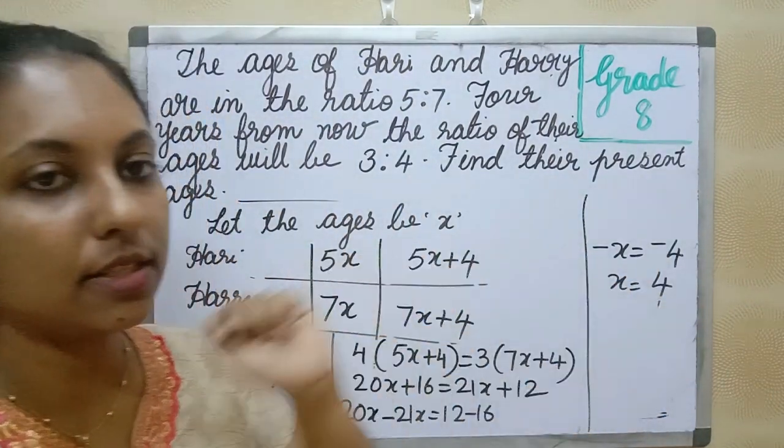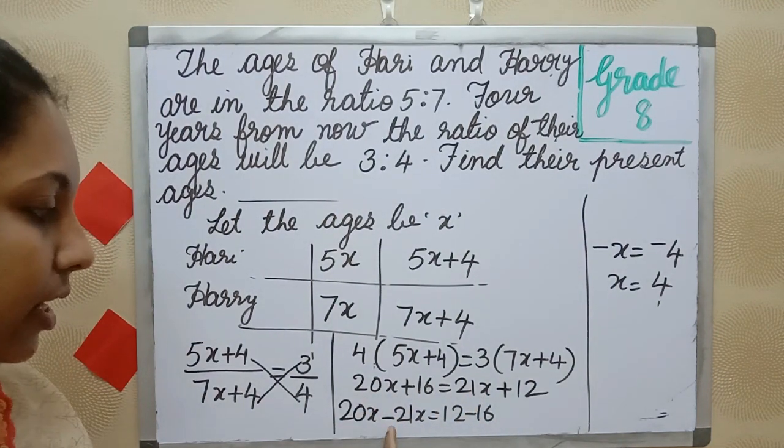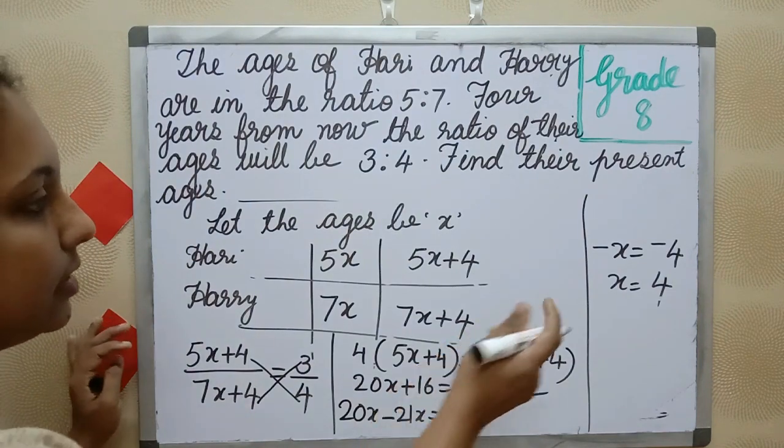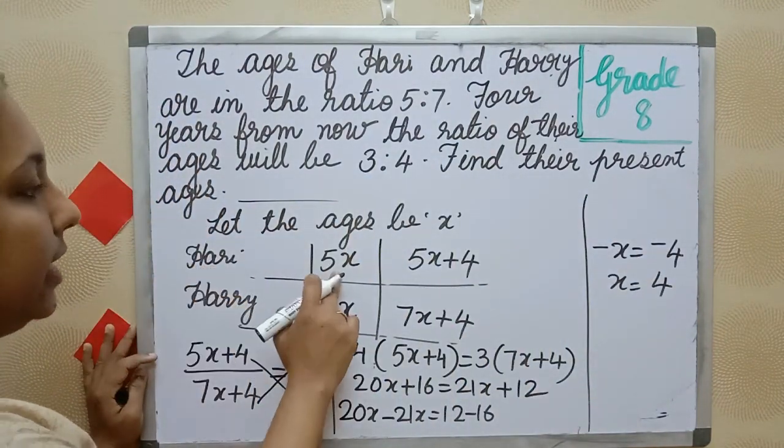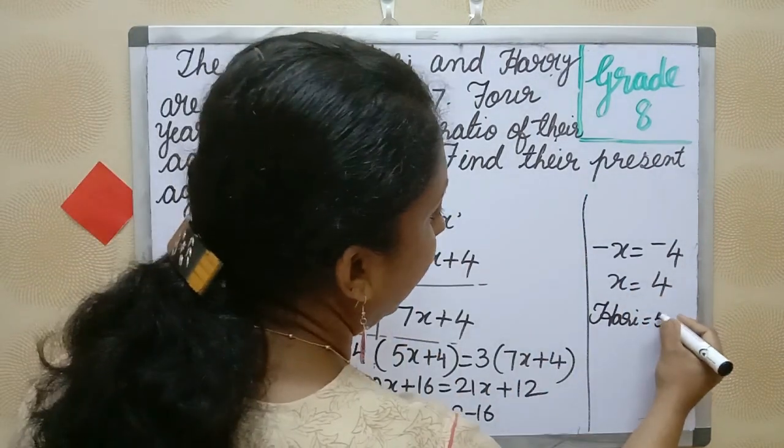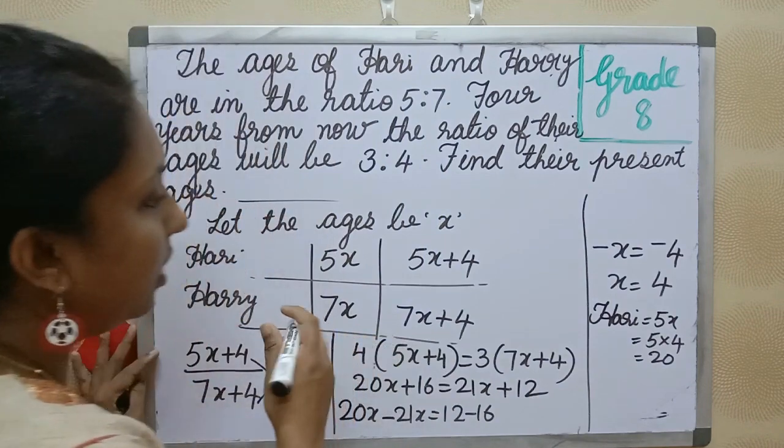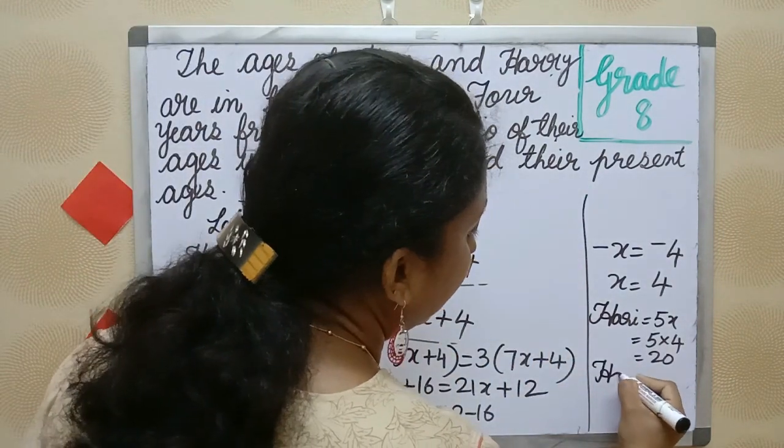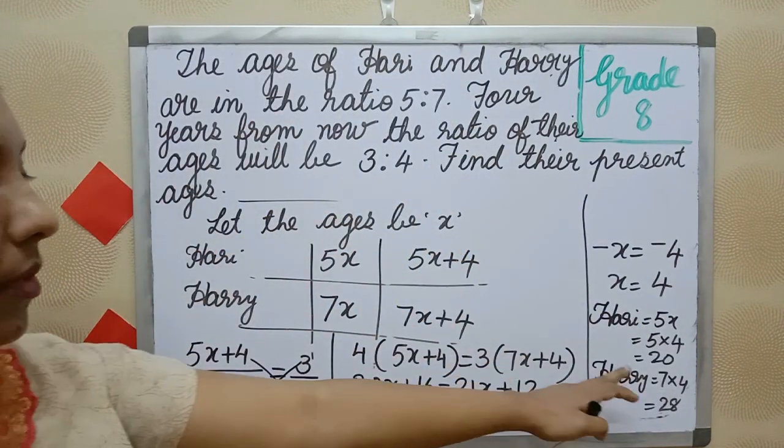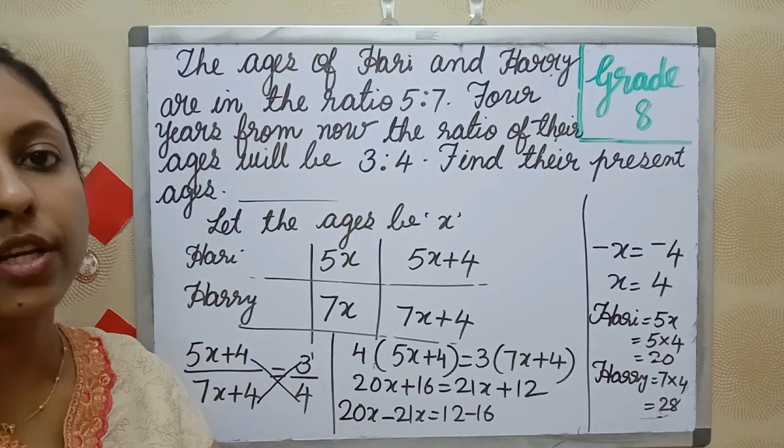Minus minus cut, so x is equal to 4. Harry's present age is 5x, that is 5 into 4. Now Harry is 20 years old and Harry is 7 into 4, 28 years old. Harry is 20 years and Harry is 28 years old.